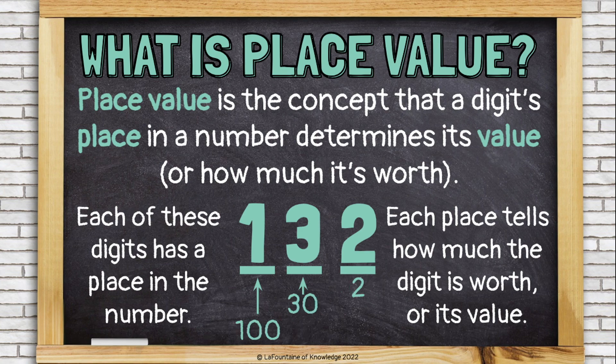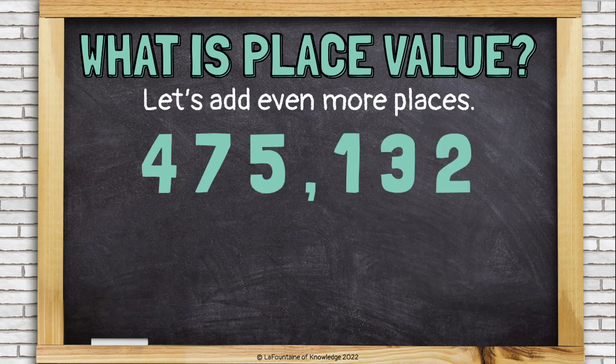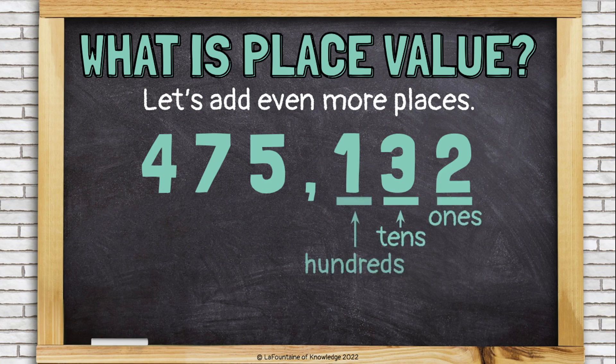The two is worth two. The three is worth 30. And the one is worth 100. Let's add even more places. We already know the ones, tens, and hundreds. Just after the comma is the thousands place.